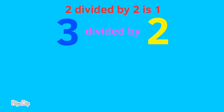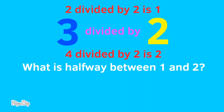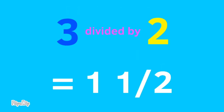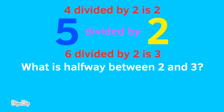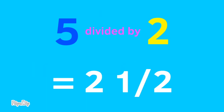3 divided by 2: 2 divided by 2 is 1, and 4 divided by 2 is 2 — halfway between 1 and 2 is 1 and a half. 5 divided by 2: 4 divided by 2 is 2, and 6 divided by 2 is 3 — halfway between 2 and 3 is 2 and a half.